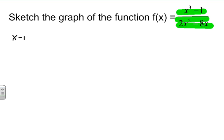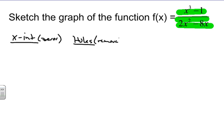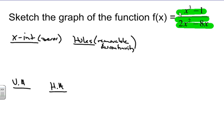We have to identify the x-intercepts, which are the zeros. We have to see if there are any holes on the graph, or removable discontinuities. We also have to find vertical asymptotes, horizontal asymptotes if there are any, and finally, if there are any slanted asymptotes, we have to identify those as well.